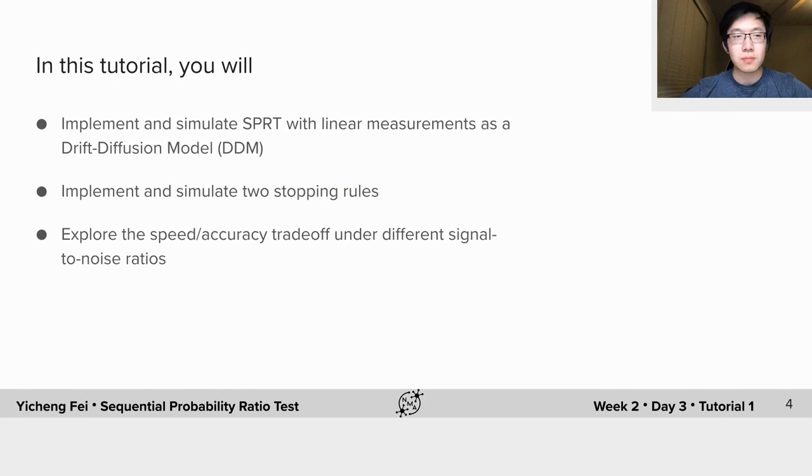In this tutorial, you will implement and simulate SPRT with linear measurements as a drift diffusion model. You will implement and simulate two stopping rules, and you will explore the speed accuracy trade-off under different signal-to-noise ratios.